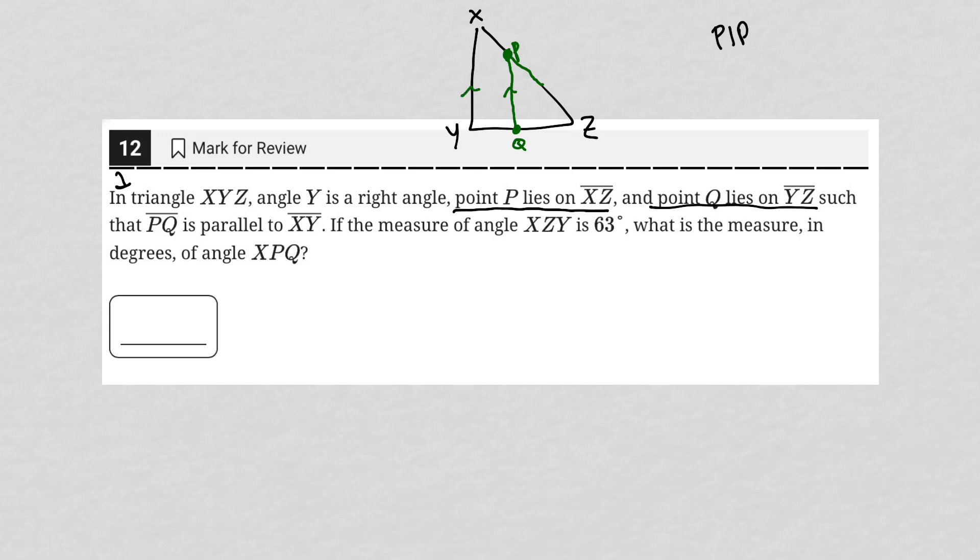The question goes on to say, if the measure of angle ZY, so ZY is down here, if the measurement of that angle is 63, so label that as 63, what is the measure in degrees of angle XPQ? XPQ would be this angle. I'll put it in red. It's the angle right there.